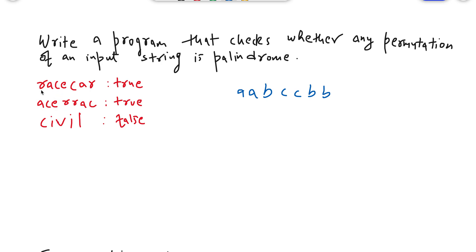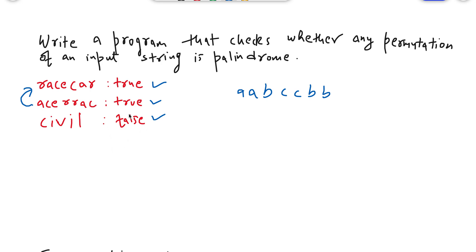We are given a couple of examples. The first example is 'racecar' — it is a direct palindrome, so we return true. The second example is 'acerrbc' — if we look at it closely, it is a permutation of 'racecar', so we return true for this also. However, for the third example, even if we rearrange the characters we will never get any permutation which is a palindrome, so we return false.